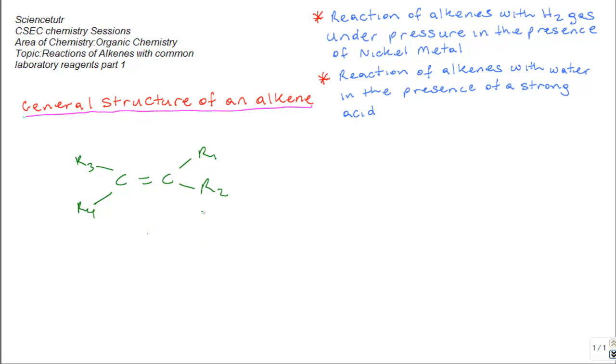Now this double bond is very reactive and very easy to break because one of the bonds that compose the double bond is weaker than the other. And because of this, alkenes are known to be a reactive species of hydrocarbons or organic compounds.